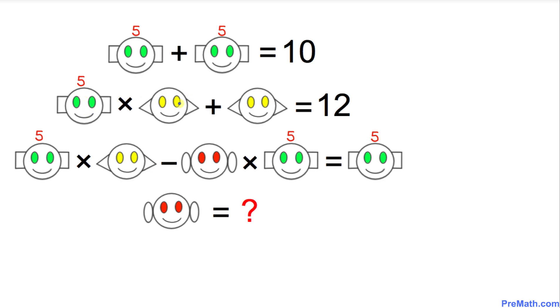I'm going to call this yellow happy face the value y. This one is y, this one is y. So then this equation is going to become 5 times y plus y equals 12. I'm going to write down 5y + y = 12, so that's going to give us 6y = 12. Divide both sides by 6, so y turns out to be 2.